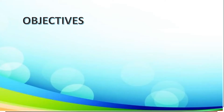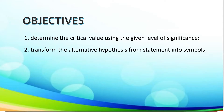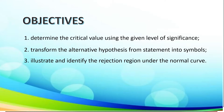Our objectives are: determine the critical value using the given level of significance, transform the alternative hypothesis from statement into symbols, and illustrate and identify the rejection region under the normal curve.